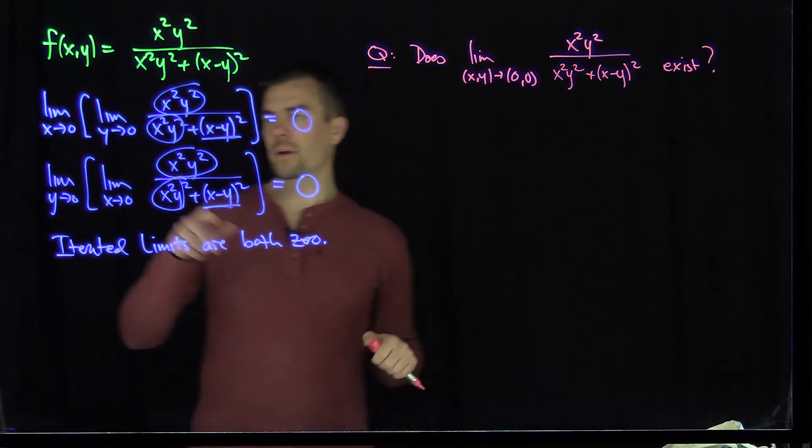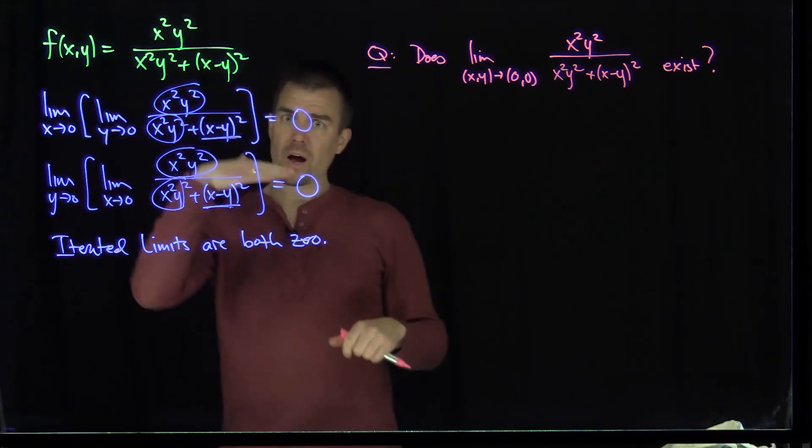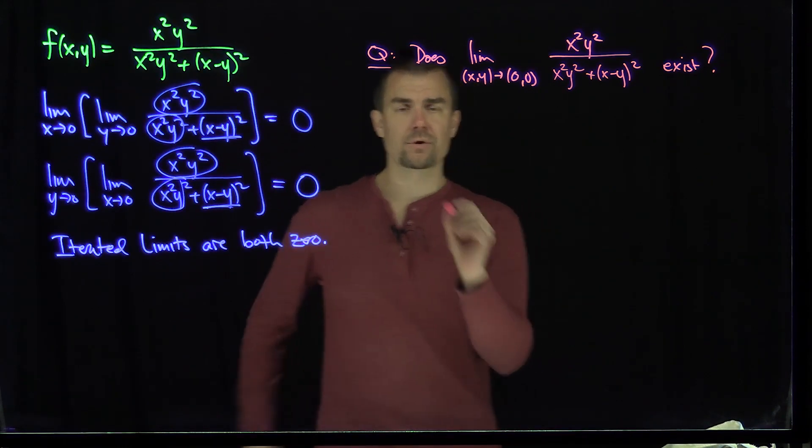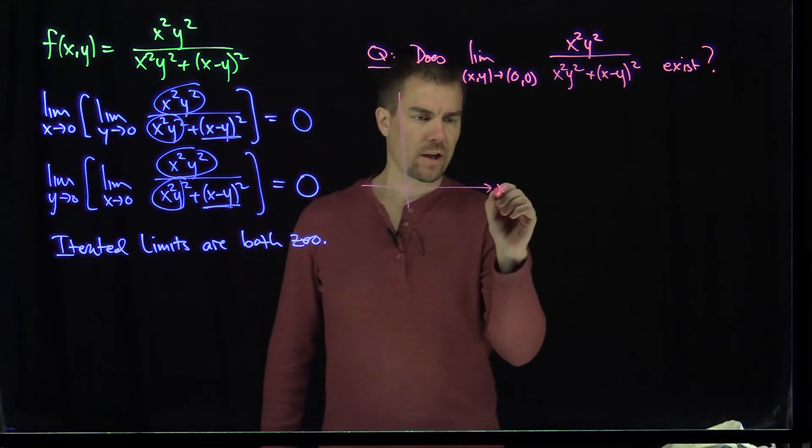Well, as we saw previously, along both, as y goes to zero, that would be along the y-axis. As x goes to zero, that's along the x-axis. What I'll do now is I'll consider a different trajectory. I'll consider the trajectory in the xy plane,